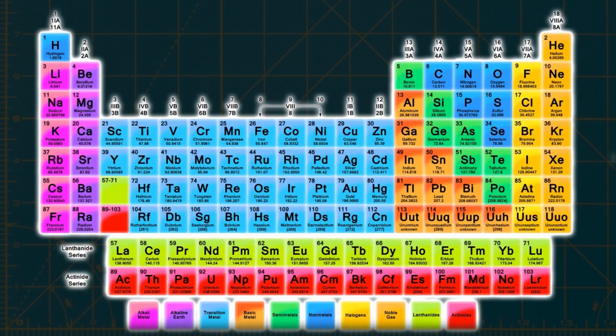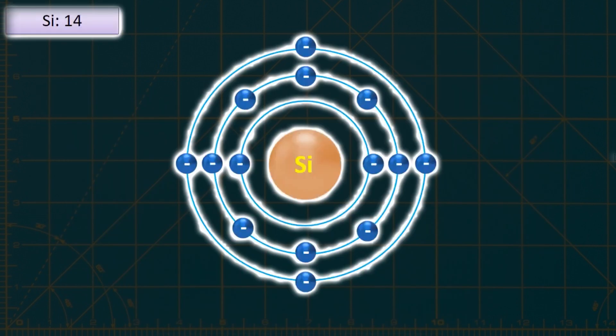On the periodic table, silicon and germanium are located in group 4A. Silicon has an atomic number of 14, while germanium has an atomic number of 32. This means that silicon has 14 electrons in total, while germanium has 32 electrons.